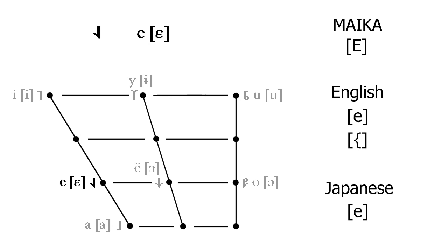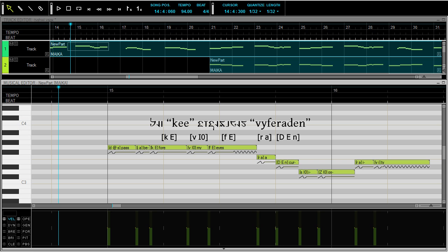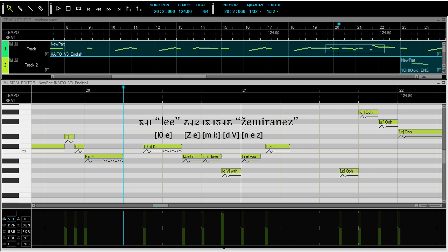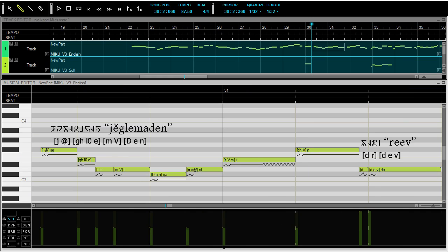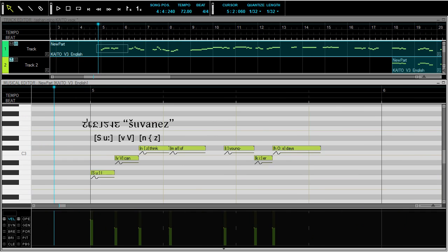An alternative that sometimes works better with English Vocaloids is capital U. The vowel E is always like the short E in BED even when it's a long vowel. Maika uses capital E to produce this sound. English Vocaloids usually just use E for this sound.